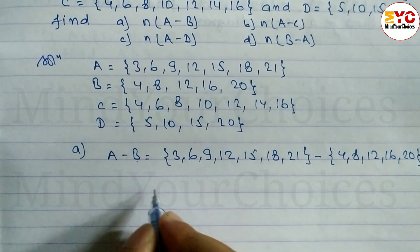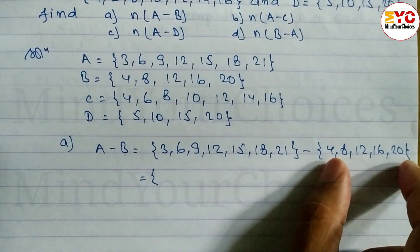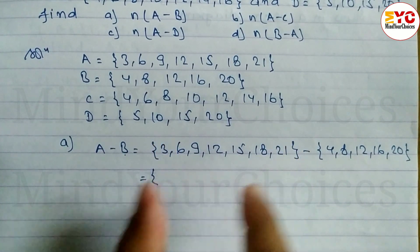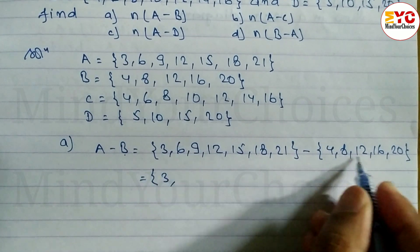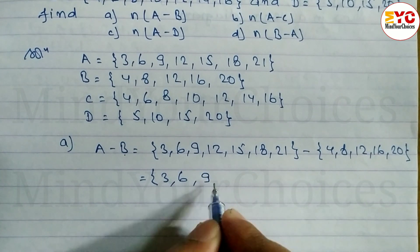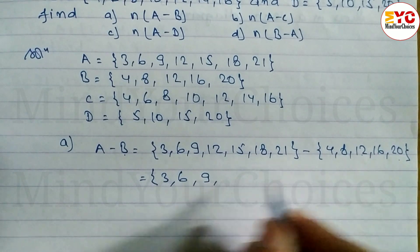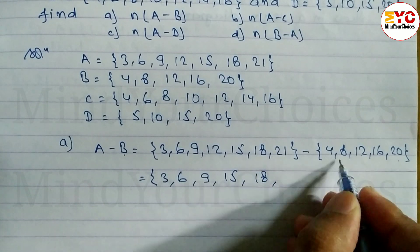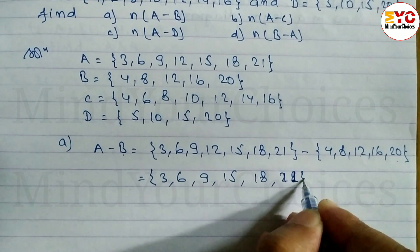To find the difference of these two sets, we keep the elements remaining in set A. Three is not in set B, so we write 3. Six is not in B, so we write 6. Nine is not in B, so we write 9. Twelve is in B, so twelve and twelve cancel. Fifteen is not in B, so we write 15. Eighteen is not in B, so we write 18. Twenty-one is not in B, so we write 21.